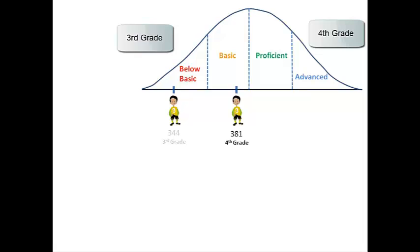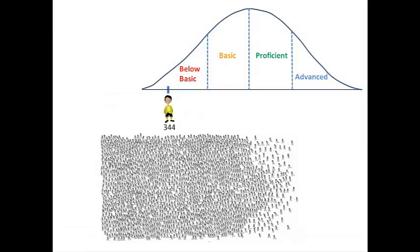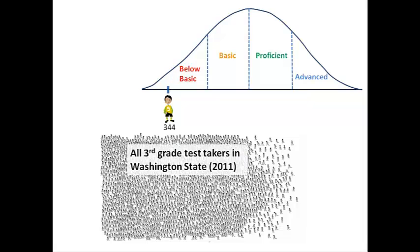However, it remains unclear if this is an average or below average amount of growth. We want to understand how Anthony has improved. We attempt to define above and below average growth by placing Anthony's growth in the context of a comparison group. Last year, when Anthony was in third grade, he scored 344. 75,000 other third graders in Washington took the same test in reading. Anthony was just one student among them.